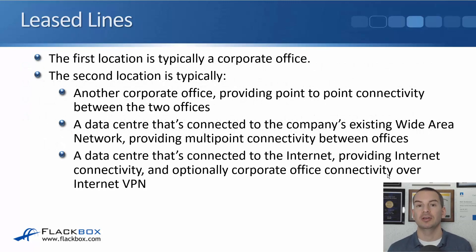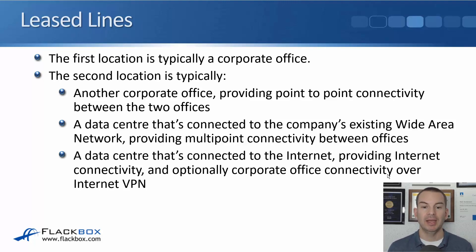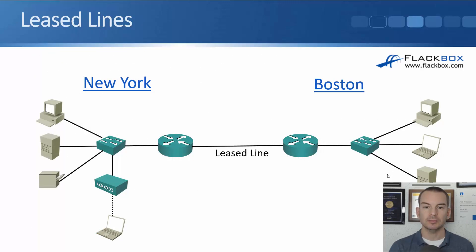With leased lines, the first location is typically a corporate office and the second location is typically either another corporate office — providing point-to-point connectivity between the two offices — or it could be going to a data center connected to the company's existing LAN, providing multi-point connectivity, or going to a data center connected to the internet providing internet connectivity and optionally corporate office connectivity using internet VPN. The data center here is at the service provider. For example, we've got an office in New York and an office in Boston with a point-to-point leased line between them.